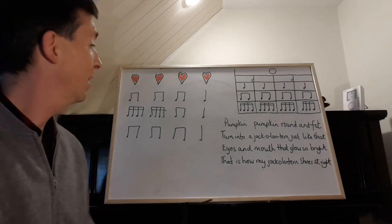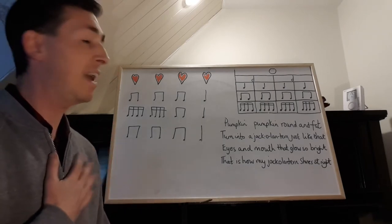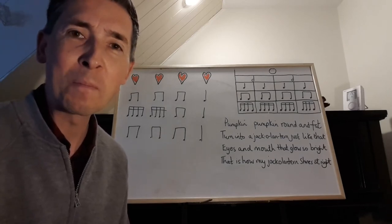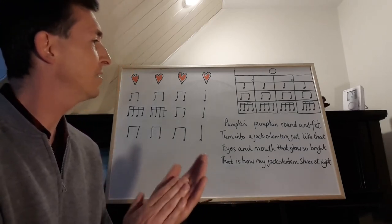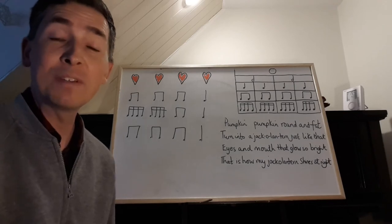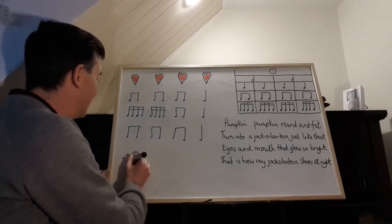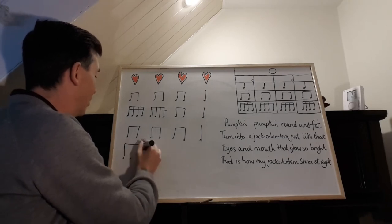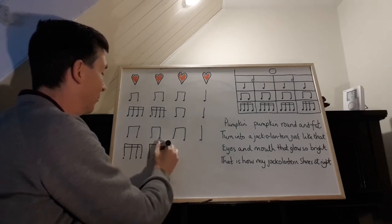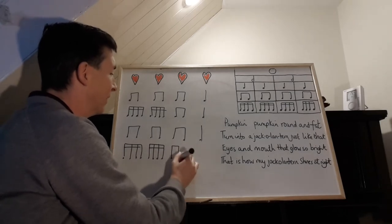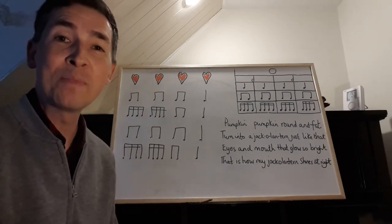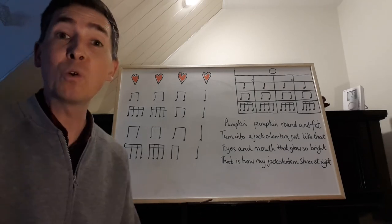That just leaves us with the very last line: that is how my jack-o'-lantern shines at night. Do you notice anything about that line? Turn into a jack-o'-lantern just like that — that is how my jack-o'-lantern shines at night — it's the same as line two, isn't it? So we've got repetition, because line two and line four are identical rhythms. Although we have different words for each line of the rhyme, very often in music you get repetition in the rhythm and, of course, in the notes.